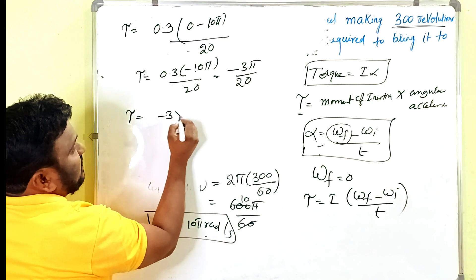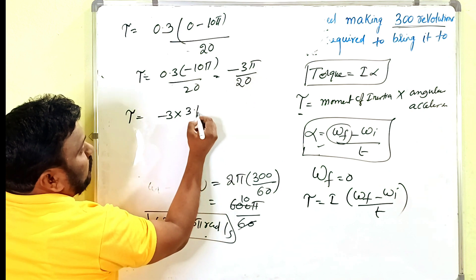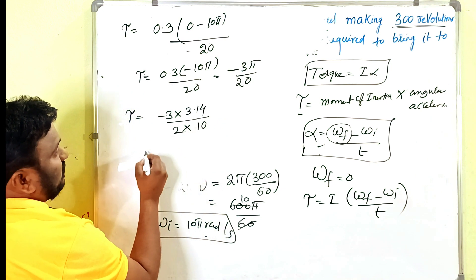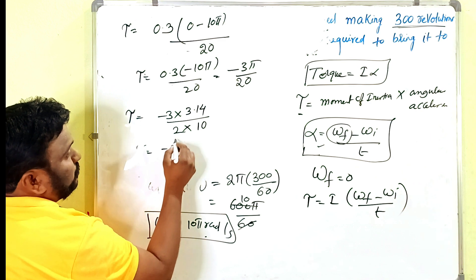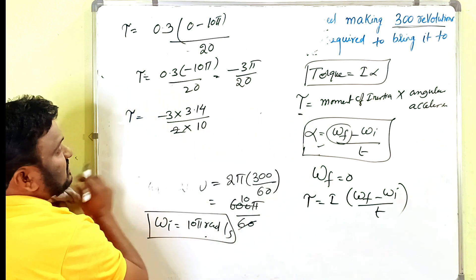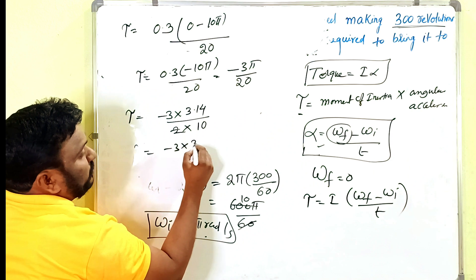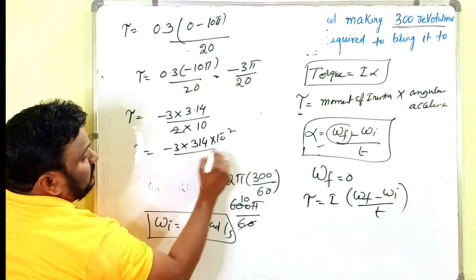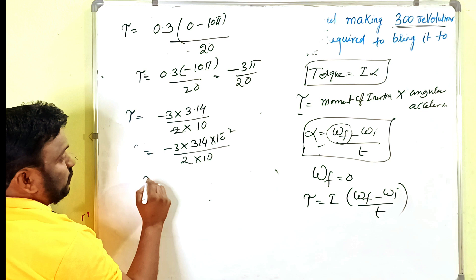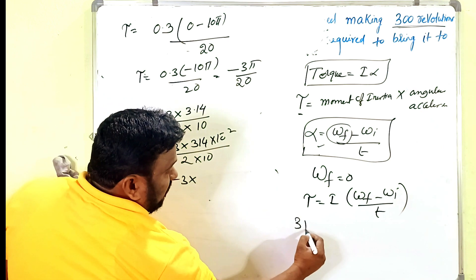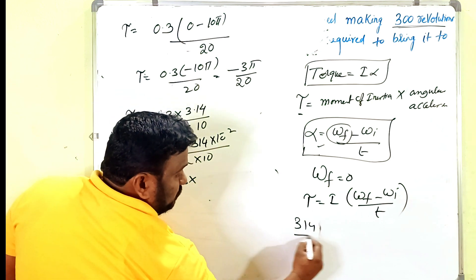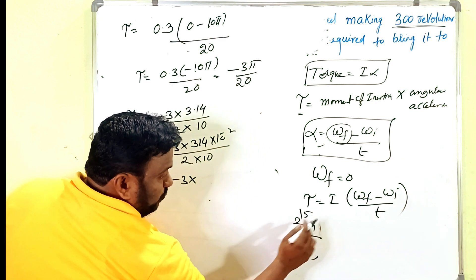Now substituting π = 3.14: τ = −3 × 3.14 / 20 = −9.42 / 20 = −0.471 N·m approximately. The negative sign indicates the torque is applied in the direction opposing rotation, which is needed to stop the flywheel.